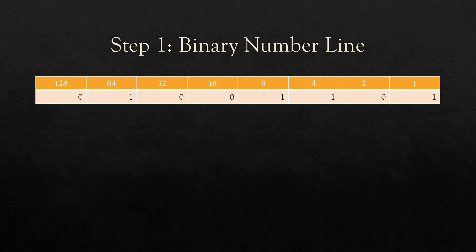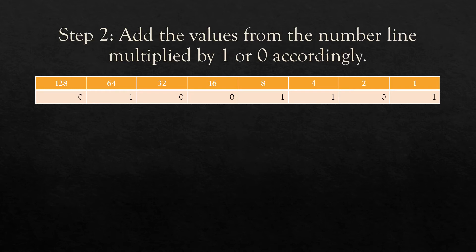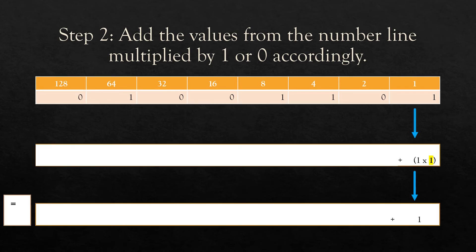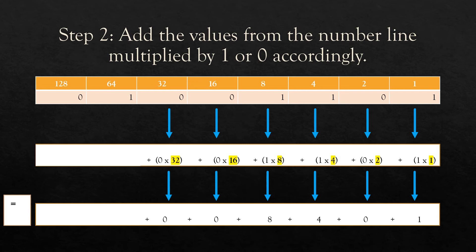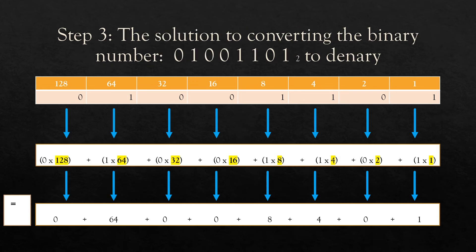The binary number line comes from base 2: 2 to the power of 0 is 1, 2 to the power of 1 is 2, 2 to the power of 2 is 4, 2 to the power of 3 is 8, 2 to the power of 4 is 16, 2 to the power of 5 is 32, 2 to the power of 6 is 64, and 2 to the power of 7 is 128. After writing the binary number line on top of our question, we multiply each value by the corresponding 1 or 0: 1×1, plus 0×2, plus 1×4, plus 1×8, plus 0×16, plus 0×32, plus 1×64, plus 0×128, giving us a grand total of 77. That means 10110010 in binary is equivalent to 77 in denary.